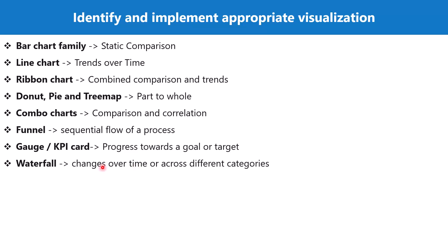Then we have the waterfall chart, which can be used to show changes over time or across different categories. As we discussed in the DAX section with time intelligence measures like month-over-month and year-over-year change, if you want to show the difference or changes over time, the waterfall chart is ideal. It can also be used to show differences between categories.